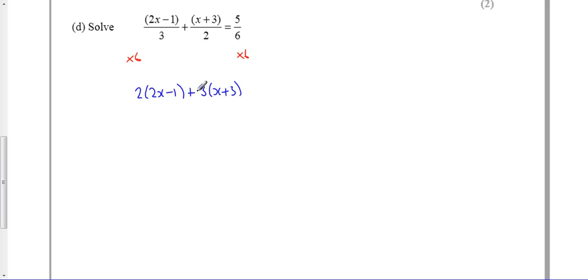Expand my brackets: 4x - 2 plus 3x + 9 is equal to 5.